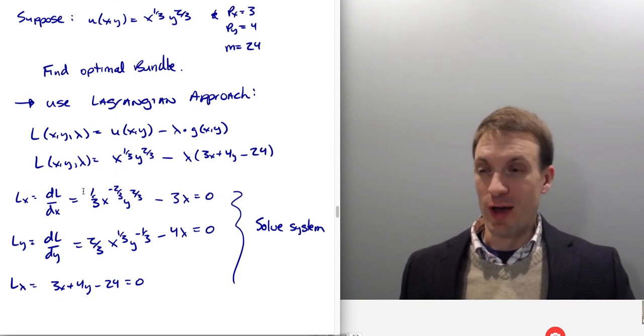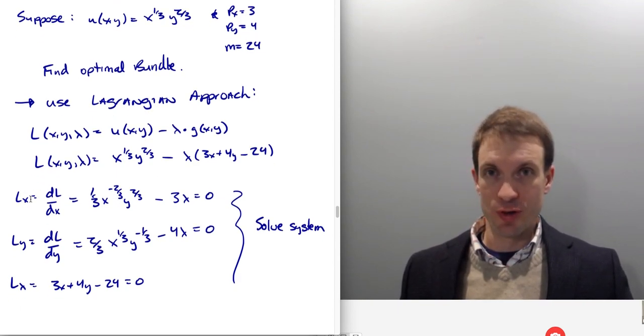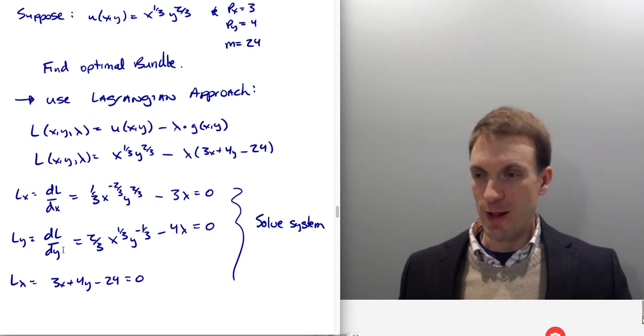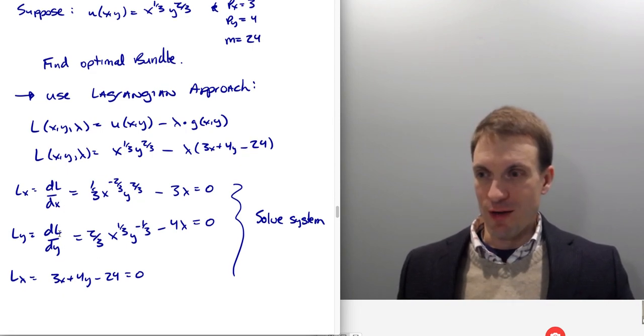So I want to take the partial of the Lagrangian function with respect to X, with respect to Y, and with respect to Lambda. That amounts to just taking partial with respect to X. So that derivative, it's gonna be 1/3 X, reduce this by one, so to the minus 2/3, and then this Y to the 2/3 comes along for the ride. Over here, I'm gonna get three Lambda. Set that equal to zero. And then here, I'm gonna have dL/dY.